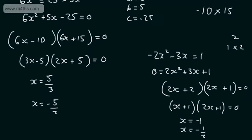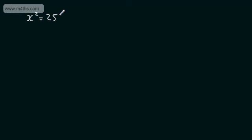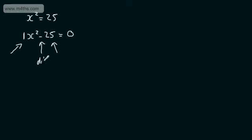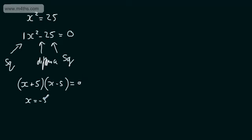Now we look at the difference of squares. For x² - 25 = 0, we have two square numbers separated by a minus sign. We can factor this as (x + 5)(x - 5) = 0, giving x = ±5 — which we knew from square rooting. For 25x² - 1, that's (5x + 1)(5x - 1). For 49x² - 36 = 0, that's (7x + 6)(7x - 6) = 0. In general: x² - y² = (x + y)(x - y).